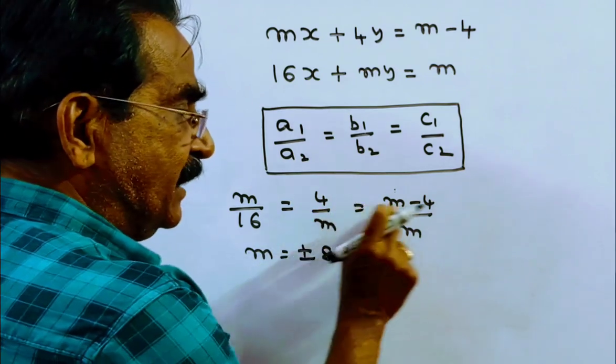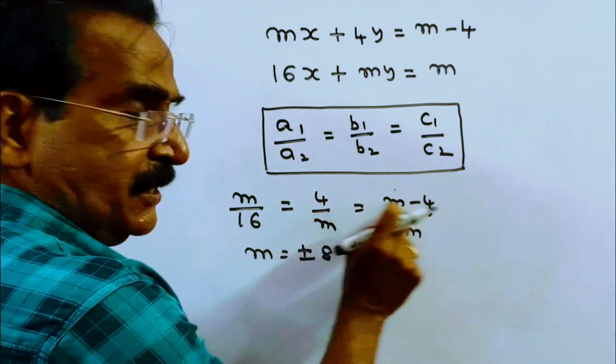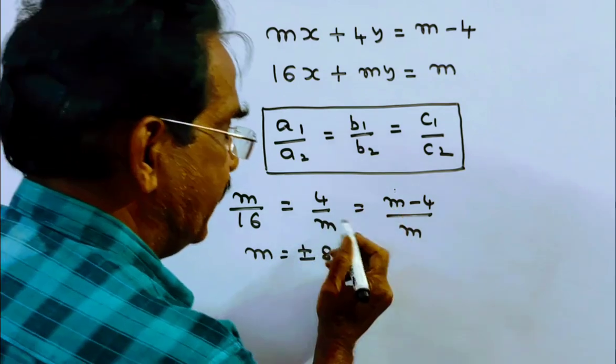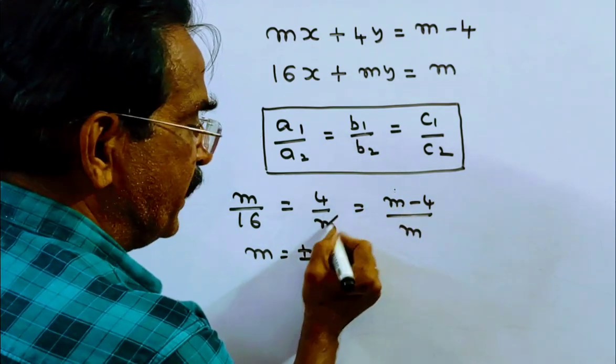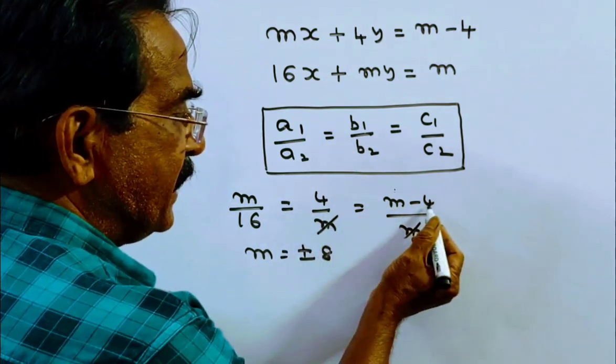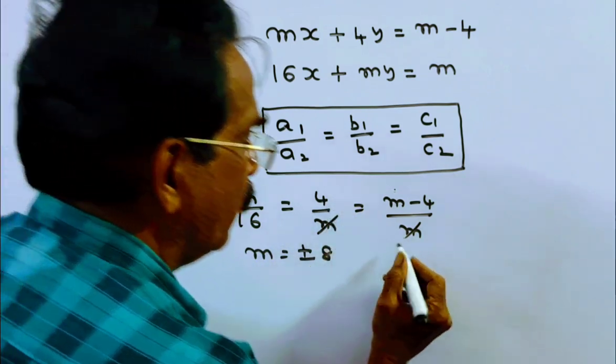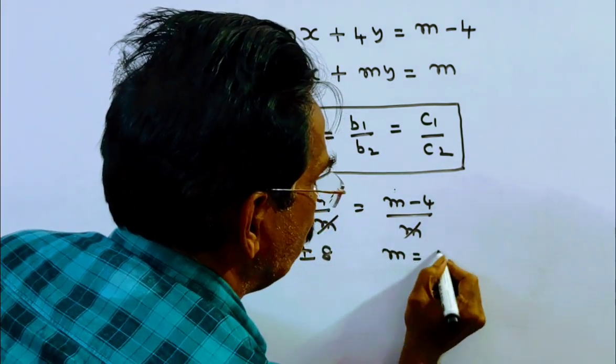Friends, we have to consider this also. So if we consider these both, m gets cancelled, m minus 4 is equal to 4, it implies m is equal to 8.